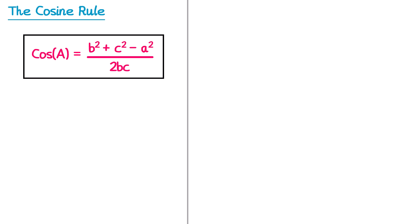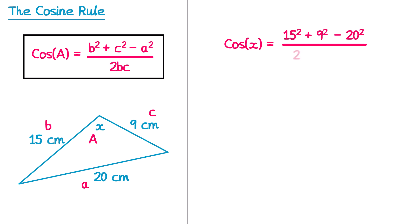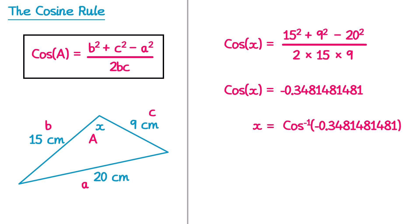Now let's try one more example where we're finding an angle. So for this triangle here we're going to find the angle that's marked x. We first label that as capital A, and the side that's opposite this, lowercase a. The other two sides are going to be b and c — so let's make the 15 the b, and the 9 the c. Then we write out this formula: cos of capital A, so that's cos of x, equals b squared, so that must be 15 squared, plus c squared, so that's plus 9 squared, subtract a squared, so subtract 20 squared, all divided by 2 times b times c, so 2 times 15 times 9. The left hand side is just cos of x, and the right hand side — if you type that whole fraction into your calculator — you should get this number here. Then we're going to use the inverse cos button, so we would have x equals inverse cos of this number, and if you do this on your calculator you'll find that this is the value of x. I'm going to round that to one decimal place, so this one would round up to 110.4 degrees.